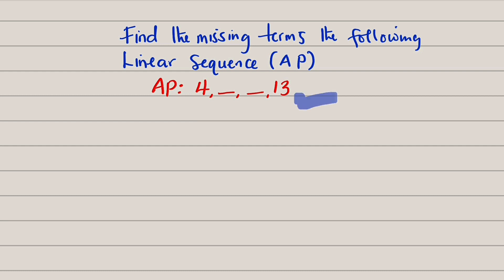So this is a linear sequence. We are given four, second term, third term are not given, but we are given the fourth term. How can we find the second and the third term? That's the question.